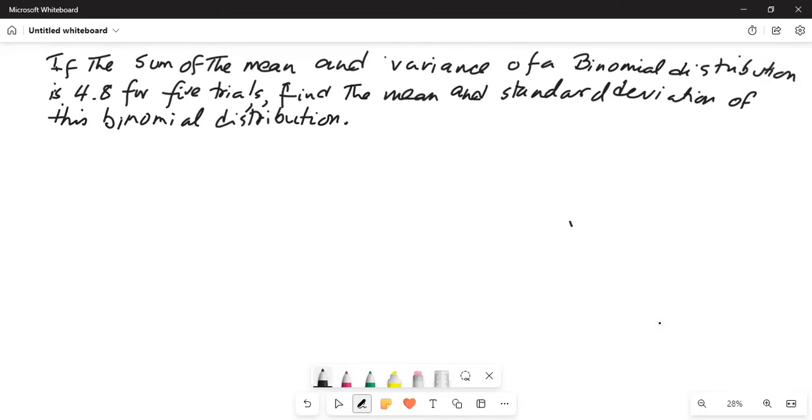If the sum of the mean and variance of a binomial distribution is 4.8 for 5 trials, find the mean and standard deviation of this binomial distribution.